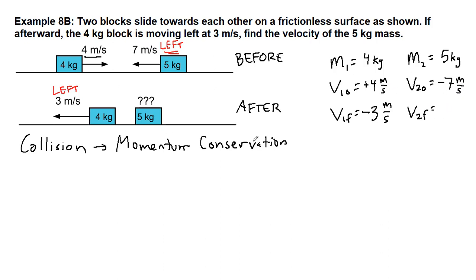Picture as step 1, list of given information as step 2, and identifying the unknown as step 3. We are trying to find the final velocity of the 5-kilogram mass. Because we have a collision, we're using momentum conservation, so we can write down that tool: m1v1 initial plus m2v2 initial equals m1v1 final plus m2v2 final.